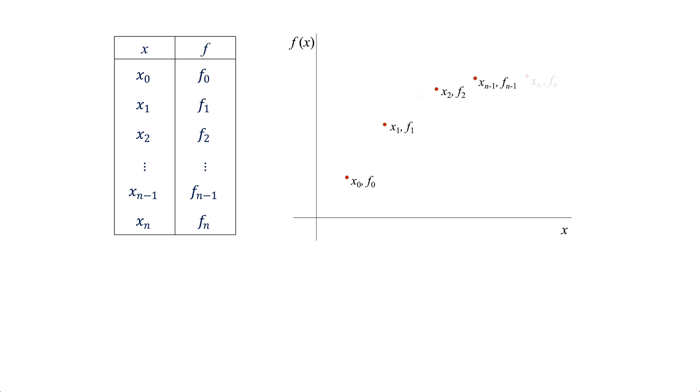Newton's interpolation aims at generating a polynomial curve that passes through all the given points. So if we have an x value at any point between x0 and xn, let's call it xp for example, we can get the corresponding f value, fp.